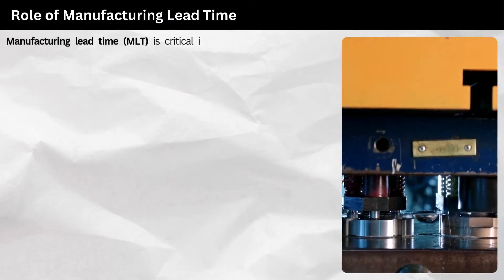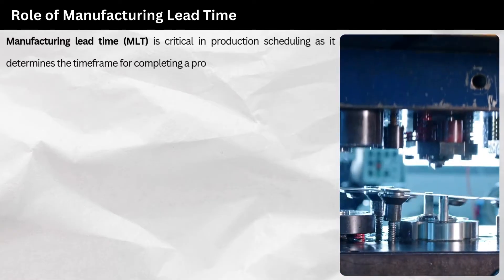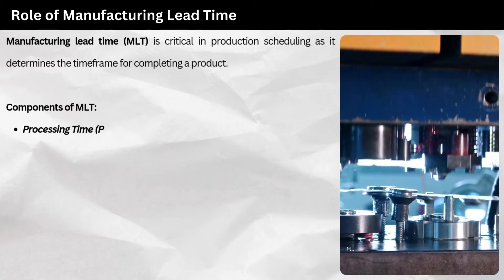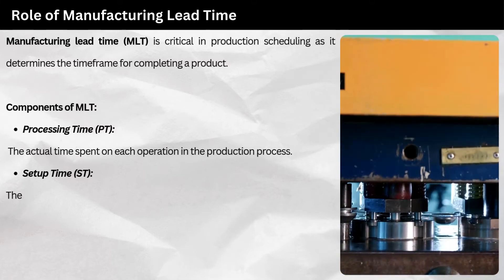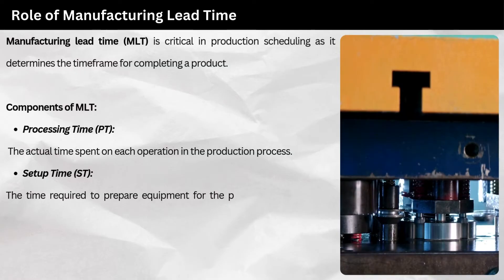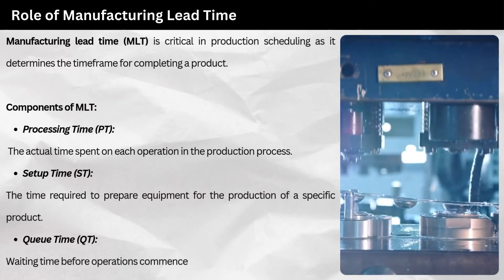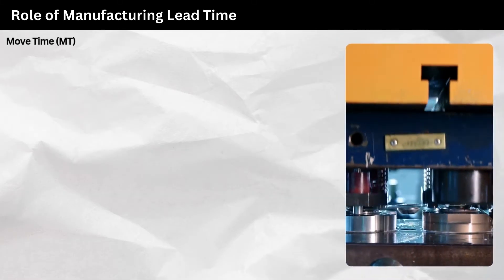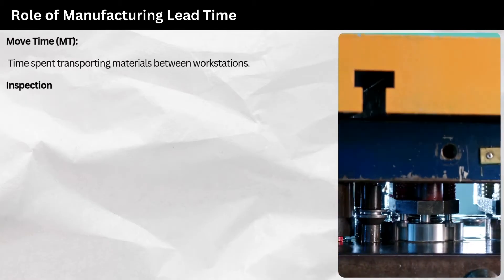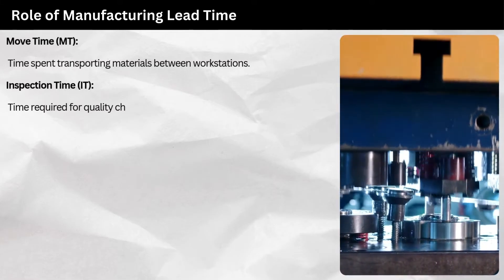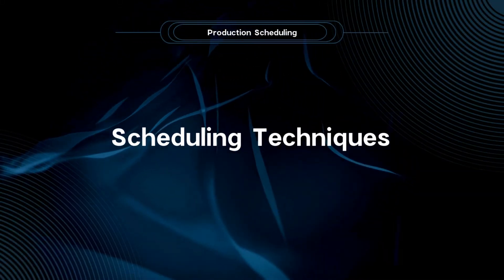Manufacturing lead time, or MLT, is critical in production scheduling as it determines the time frame for completing a product. Components of MLT include: Processing time (PT) — the actual time spent on each operation; Setup time (ST) — time required to prepare equipment; Queue time (QT) — waiting time before operations commence; Move time (MT) — time spent transporting materials between workstations; and Inspection time (IT) — time required for quality checks. The formula for MLT is shown below.